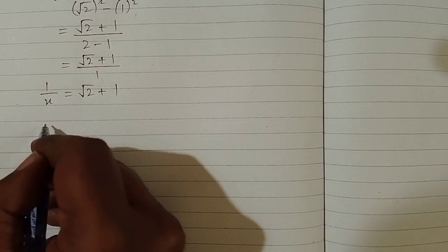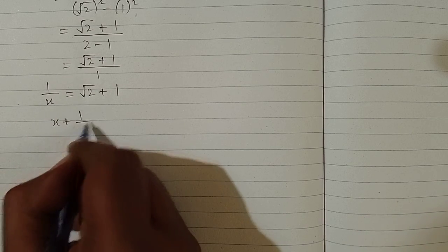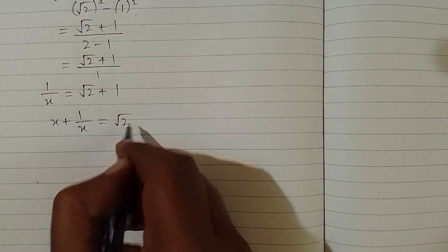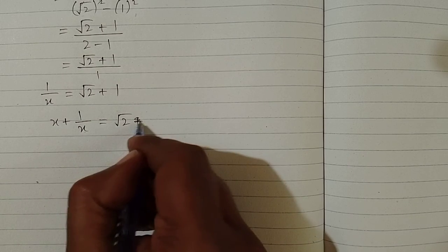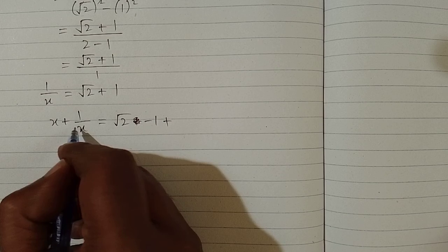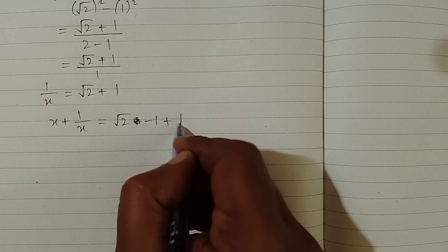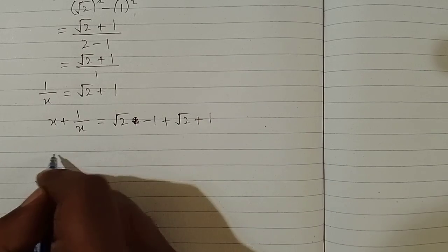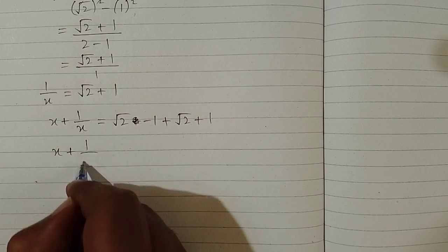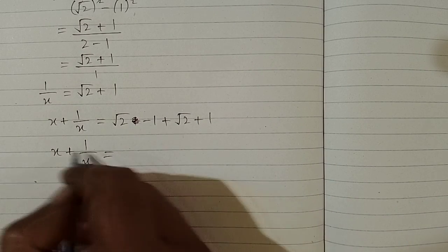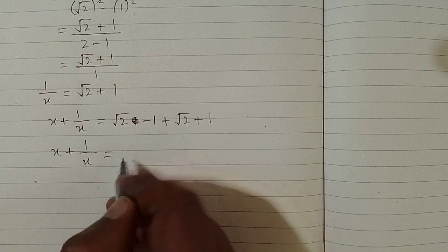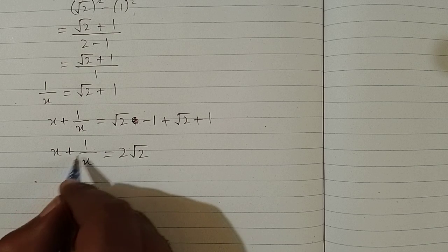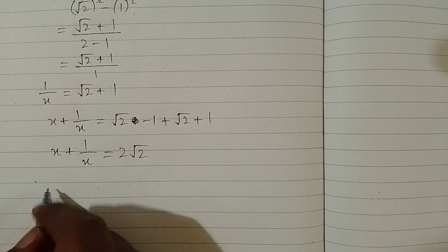Now we will find the value of x plus 1 upon x. The value of x is square root of 2 minus 1 and the value of 1 upon x is square root of 2 plus 1. So x plus 1 upon x equals square root of 2 plus square root of 2, which is 2 square root of 2, and minus 1 plus 1 is 0. So the value of x plus 1 upon x is 2 times square root of 2.